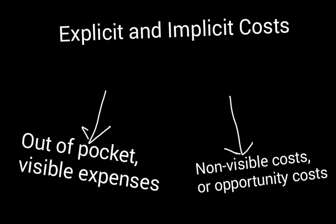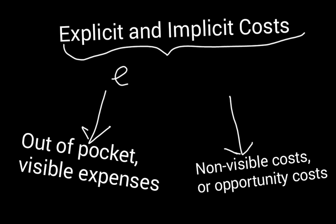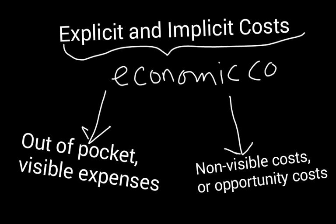In accounting, the only expenses an accountant takes into account — for example, to calculate the amount of taxes owed — are the explicit costs. But in economics, because we deal with decision-making — whether to expand the business, continue running it, or shut it down — we have to take both explicit and implicit costs into account. The sum of explicit and implicit costs is what we call total economic costs.